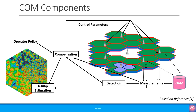The cell outage detection function triggers the cell outage compensation function to take appropriate actions. In the example shown here, the base station in the center has an outage, resulting in a coverage hole. The neighboring cells have increased their coverage in order to alleviate the degradation in coverage and quality. Cell outage compensation is typically characterized by an iterative process of radio parameter adjustment and evaluation of the performance impact. There is a clear need to estimate the performance in the vicinity of the outage area, in order to determine to what degree the compensation actions are successful in terms of satisfying the given operator policy during an outage.